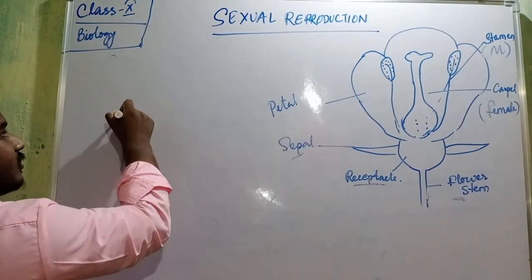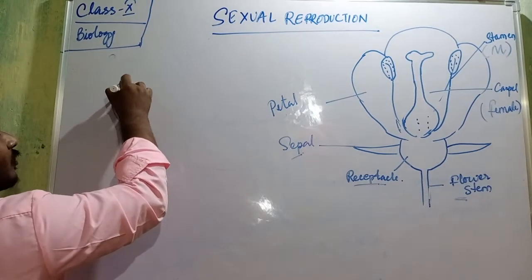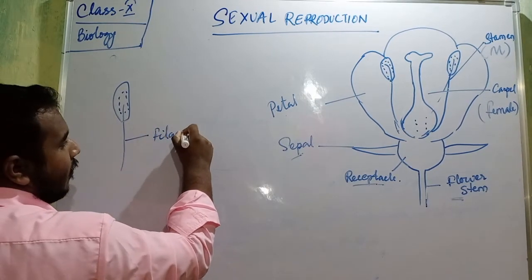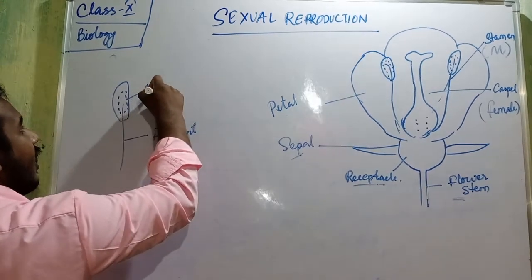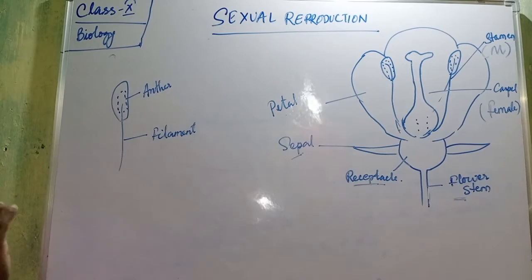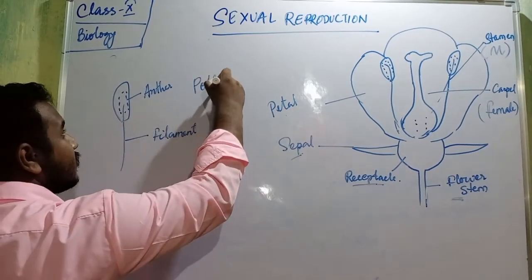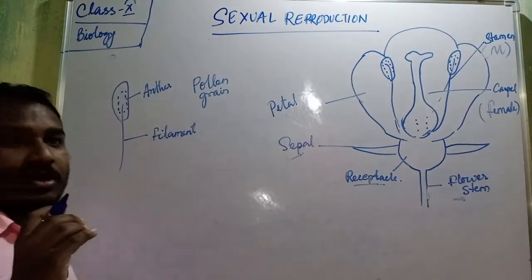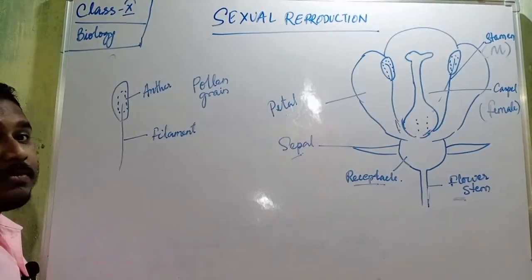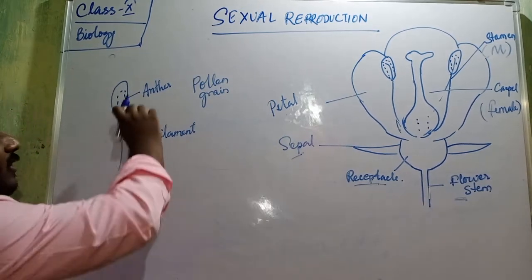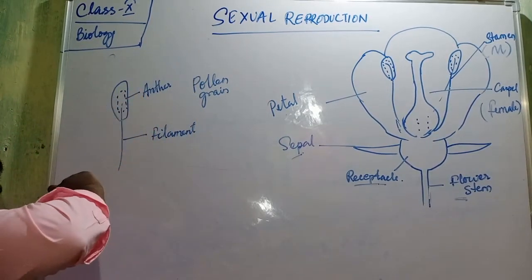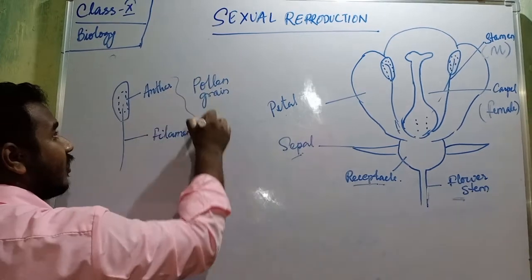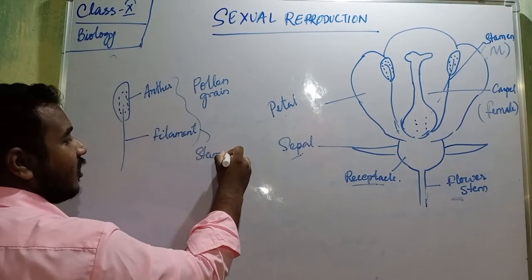Let's talk about the male part first. The stamen has two parts: the filament, which is the stalk, and the anther at the top. The anther makes pollen grains. Pollen grains are the male structures which contain the male gametes. So pollen grains are present in the anther. This total structure is called the stamen.